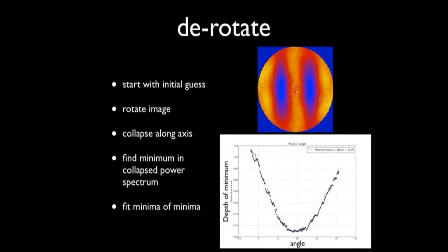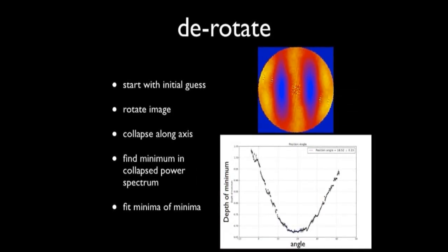To find the position angle, I do something that's a little bit, maybe a little bit unorthodox. I don't directly fit the fringe patterns. Instead, I start with an initial guess of the rotation angle. I rotate my fringe image by that amount, and I see, and then I flatten it along one axis. That gives me a one-dimensional series of oscillations if I have it close to the right angle. I look at how deep the lowest of those minima are, and I plot that as a function of trial position angle. You'll see that as you get close to the right position angle, that depth of the minima gets really small.